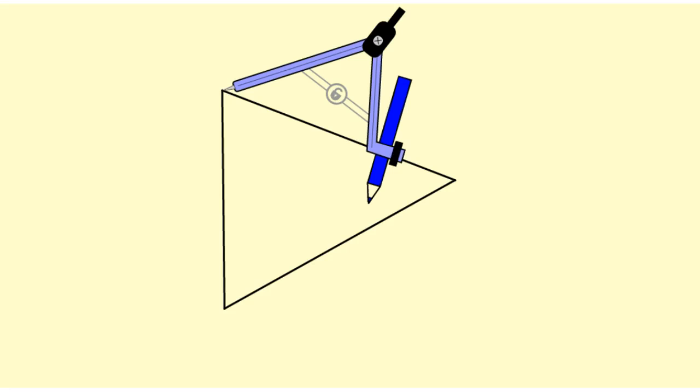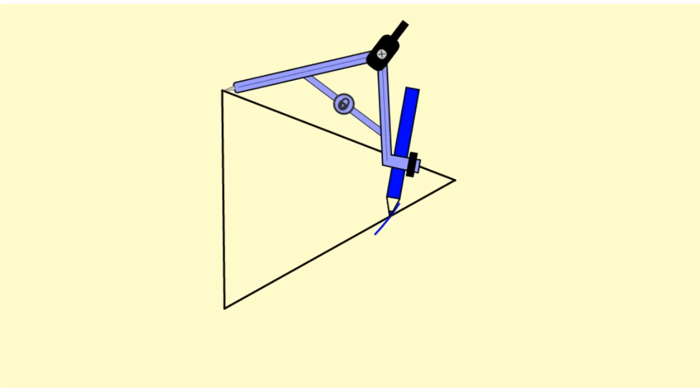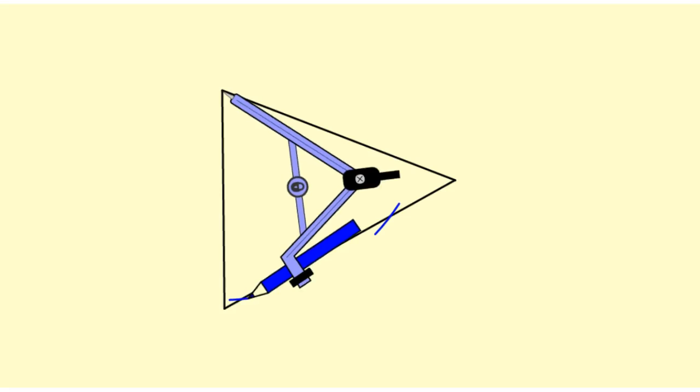To construct the first altitude, I'm going to take the compass, put the point at the vertex, and open up the compass enough so that I can make two small arcs along this side.